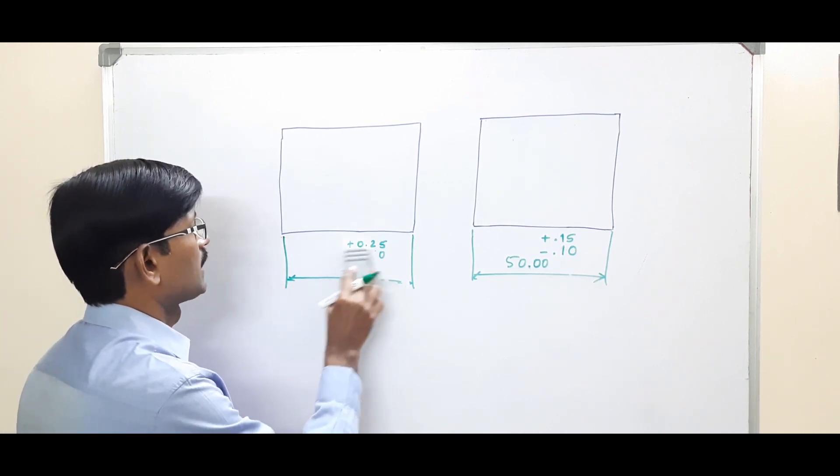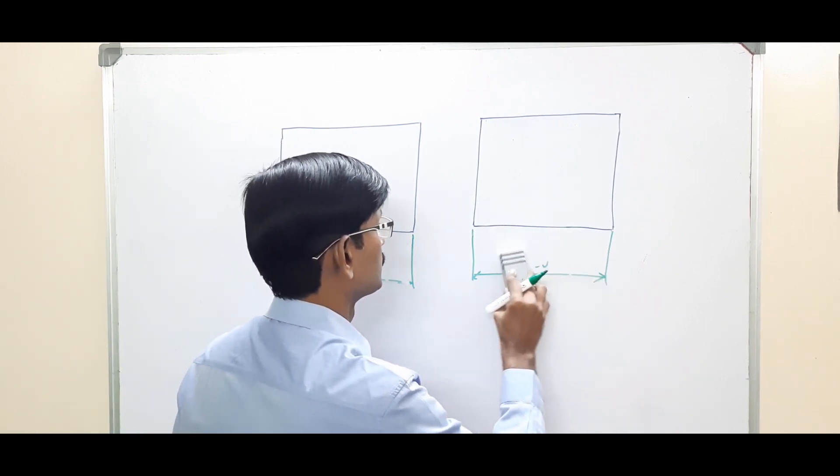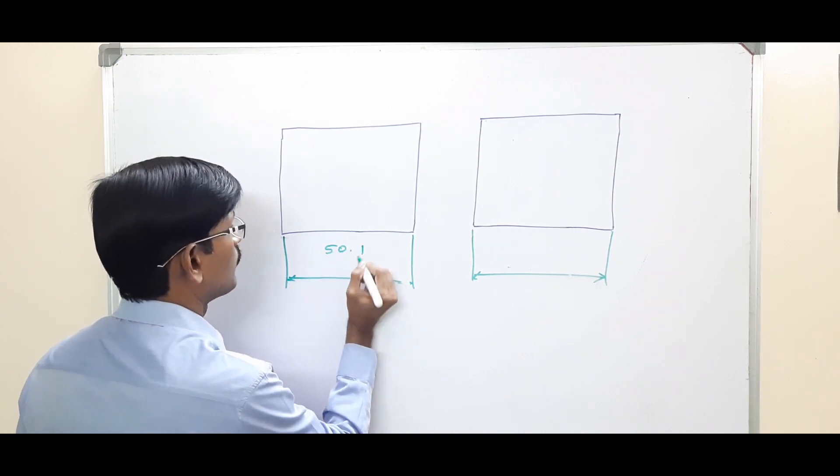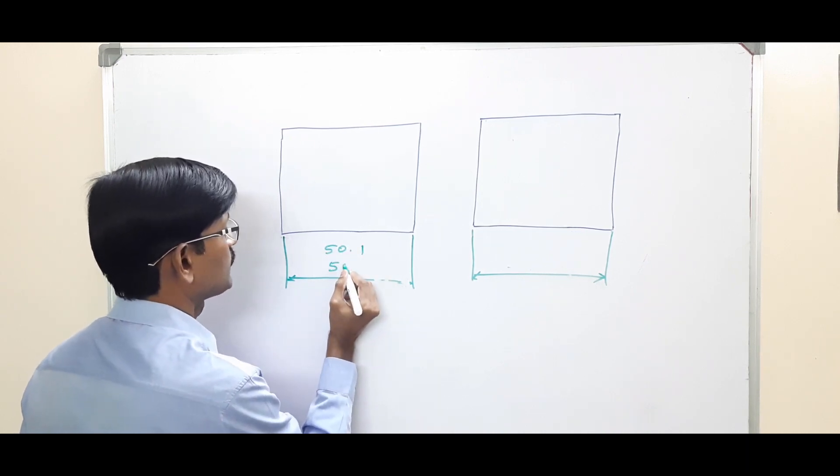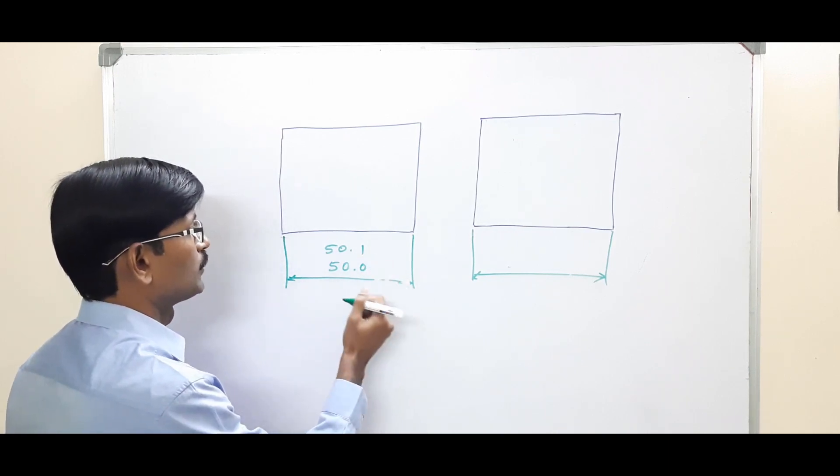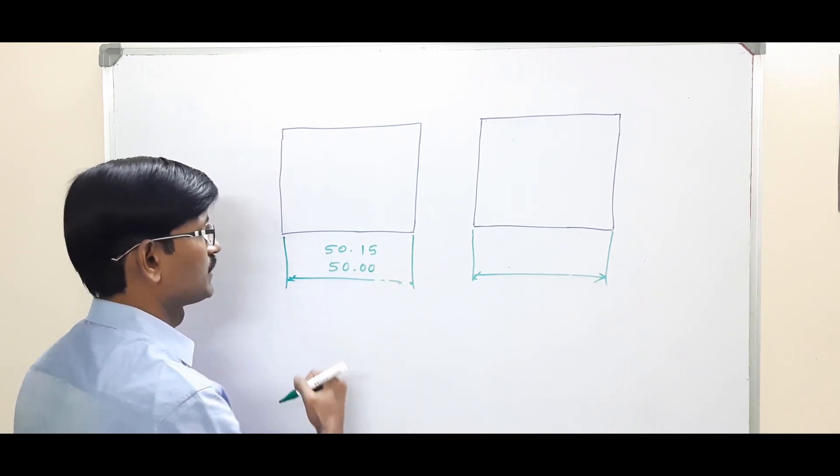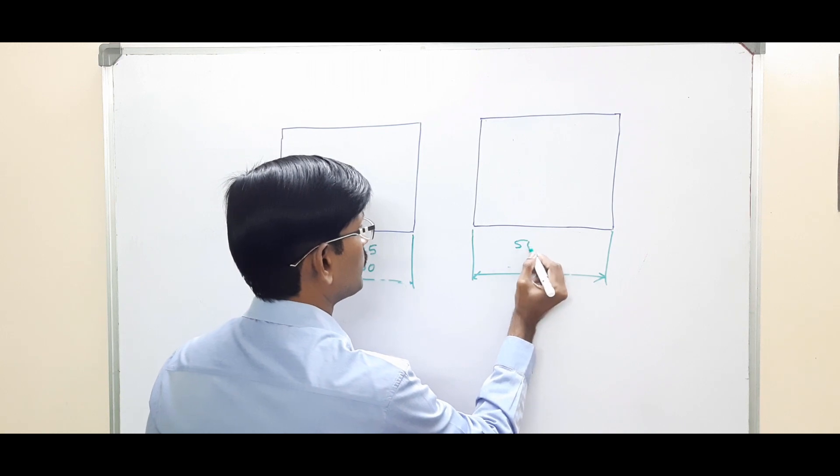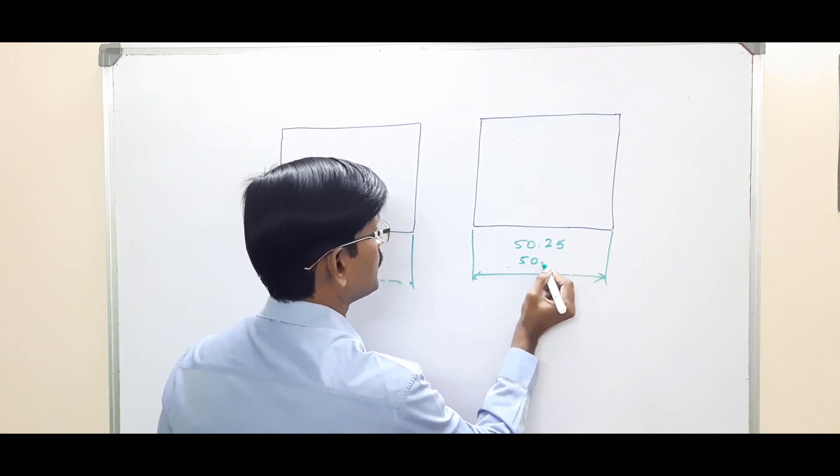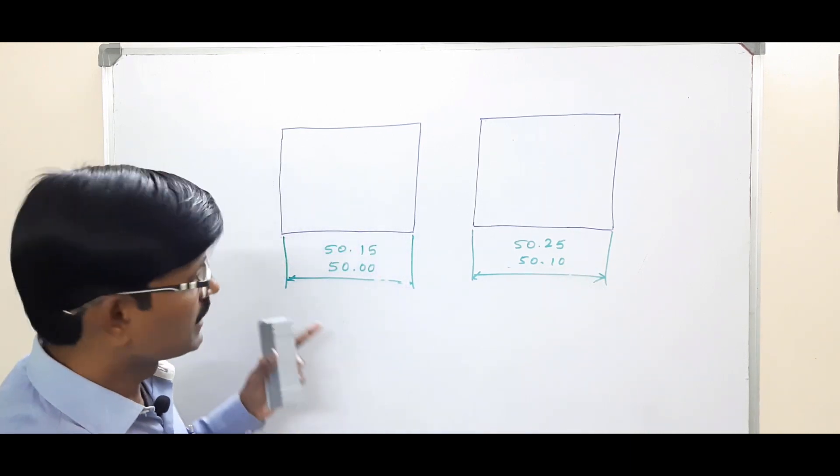Right now we can write these tolerance dimensions in the form of limit dimensions also. 50.1—then I should not write it as 50. Though it is a whole number, I have to add a decimal point and zero to make it uniform. If this is having two decimals, then I have to add two zeros. However, in this case also, 50.25, 50.10—so two decimals, one zero is added.